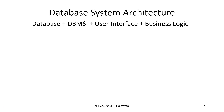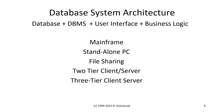To review, a database system architecture combines the database, the DBMS, the user interface, and the business logic. When we put those four elements together, we find that there are basically five architectures.